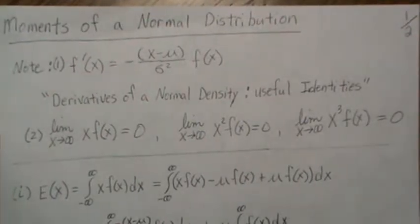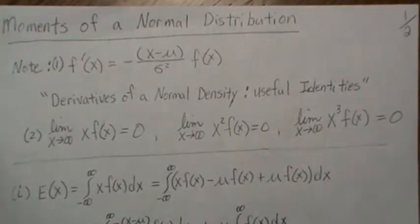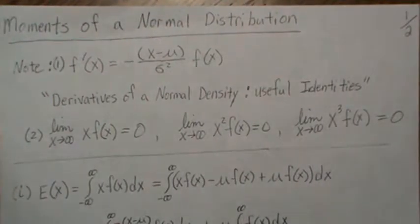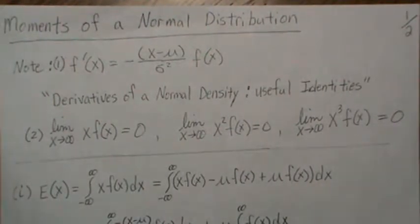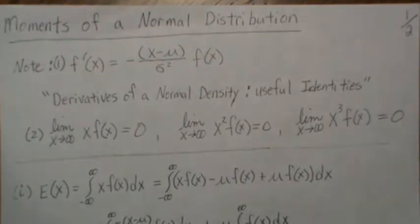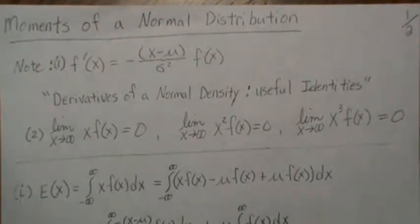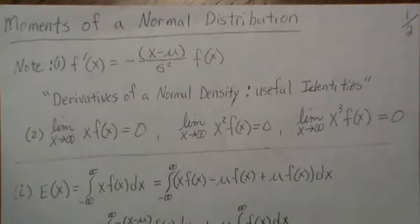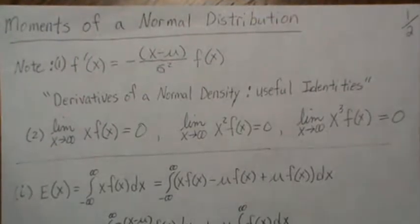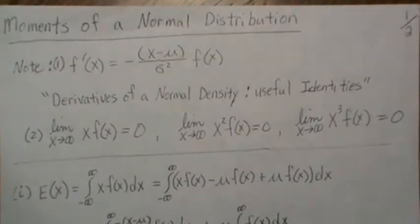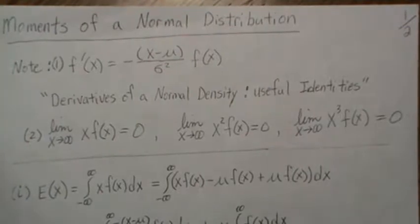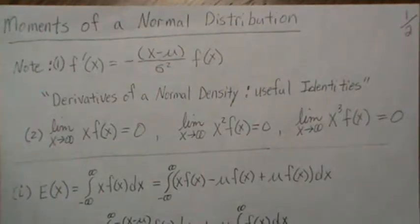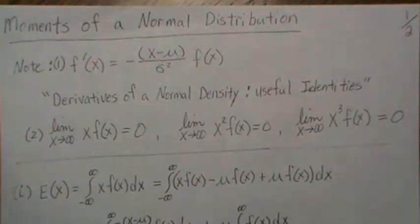Hello, in this video we're going to derive the moments of a normal distribution from scratch. The reason I'm doing it is I'm going to derive the mean and the variance of a non-central chi-square distribution and I'm going to refer back to this.